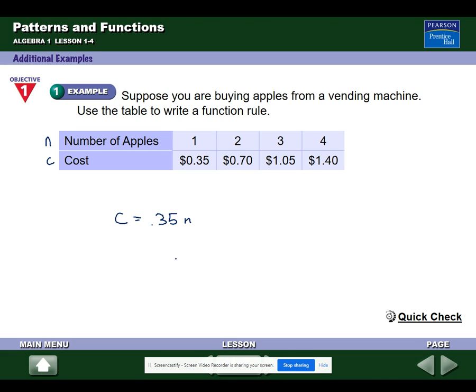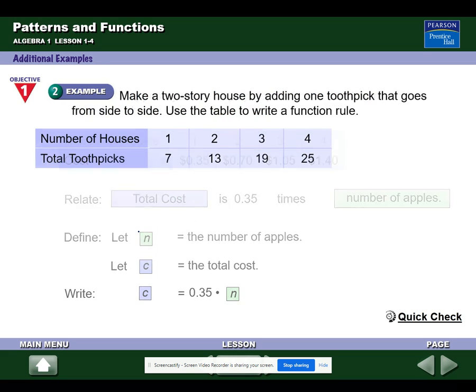Hey, if you buy zero apples, you spend zero dollars, and zero times .35 would give you zero, of course. So that's a function.